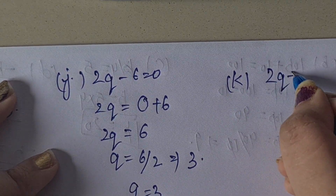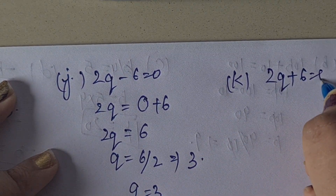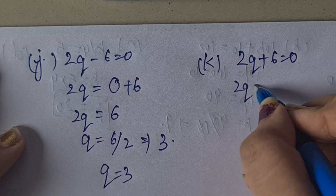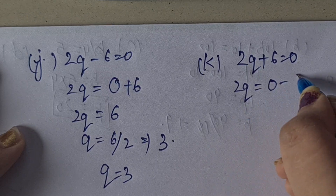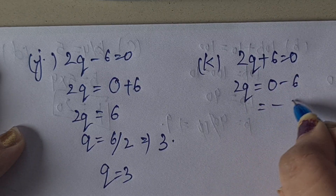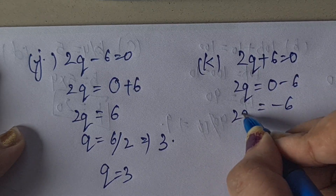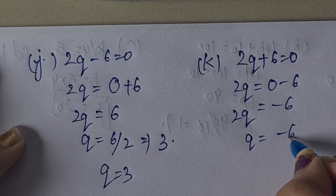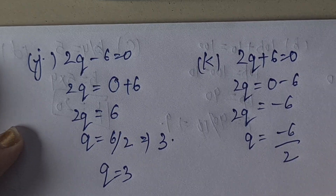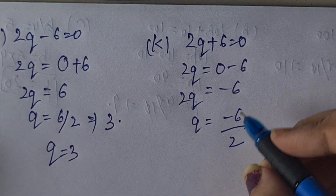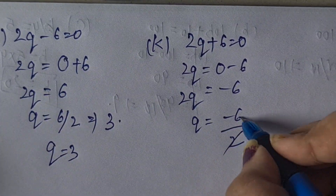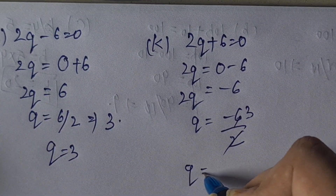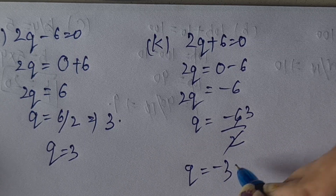Next part: 2Q = minus 6. So Q = minus 6 upon 2 = minus 3. Q equal to minus 3 is the answer.